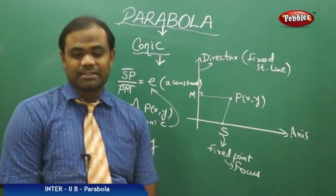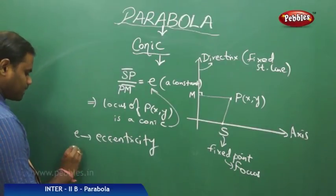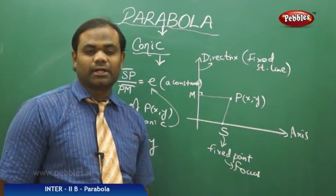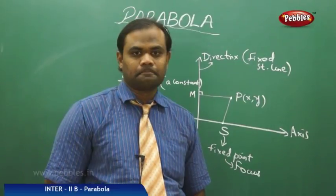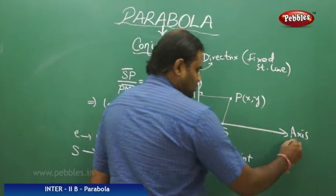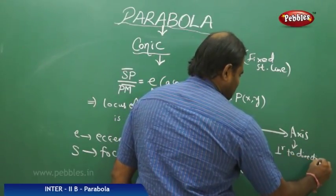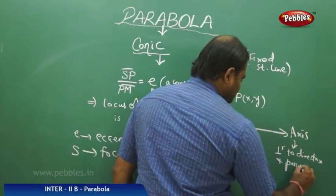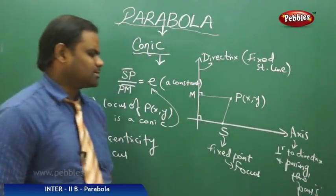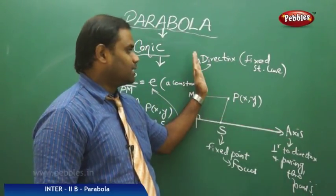So E is referred to as eccentricity, given by the formula SP by PM, where S is the focus and the fixed line is the directrix. The straight line passing through the focus and perpendicular to the directrix is called the axis.